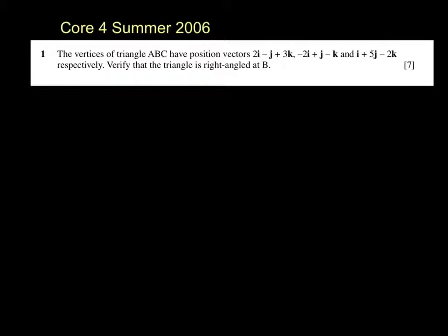Core 4 Summer 2006 Question 1 Vectors. I'm going to start by writing out the vertices so O to A is 2i minus j plus 3k.